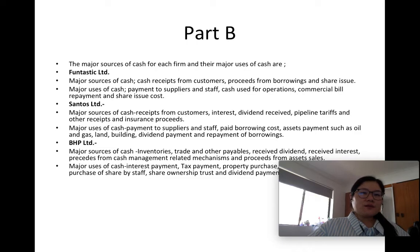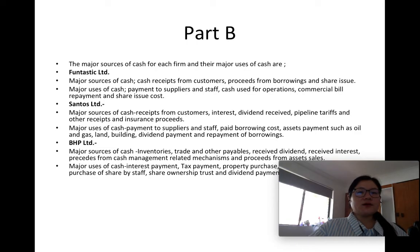For BPH Limited, major sources of cash are inventories, trade and other payables, received dividends, received interest, proceeds from cash management related mechanisms, and proceeds from asset sales. Major uses of cash for BPH Limited are interest payments, tax payments, property purchase including plant and equipment, purchase of shares by staff through a share ownership trust, and dividend payments.